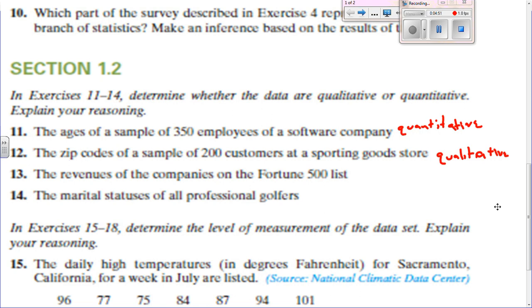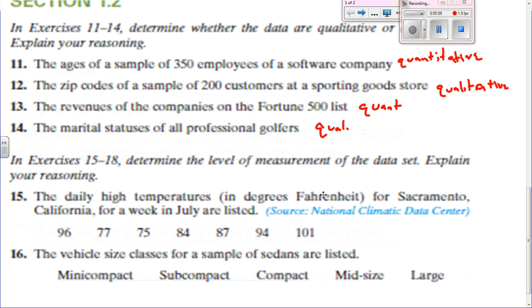Number 15. Remember we have nominal, ordinal, interval, and ratio. Daily high temperatures in degrees — that would be interval because we can subtract them. However, we could also say it's twice as hot, so it could be ratio. For example, 101 degrees is twice as hot as 50.5 degrees. So let's go with ratio for that one.